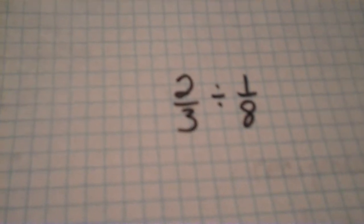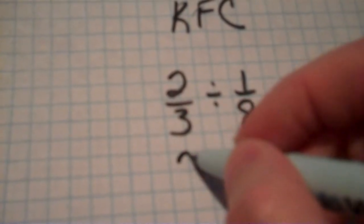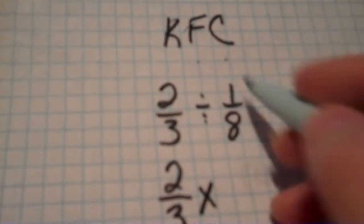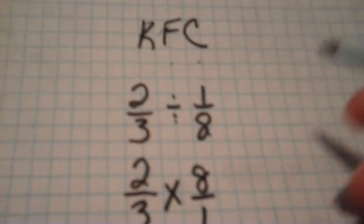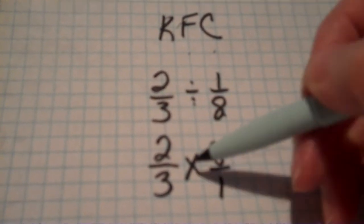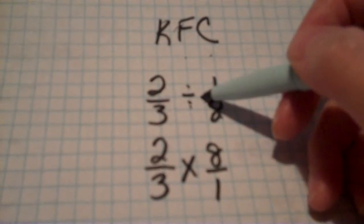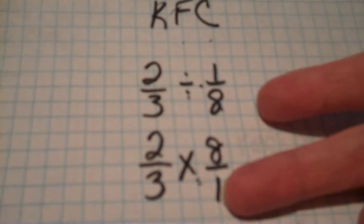Keep, flip, change — let's work a problem: two-thirds divided by one-eighth. You follow KFC, so I'm going to write KFC up here. I'm going to keep the first fraction, change the sign from division to multiplication, and flip the second fraction. Keep the first fraction and change the sign — the opposite of divide is to multiply — so you flip it.